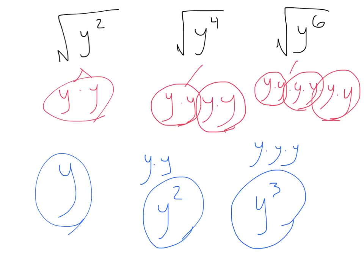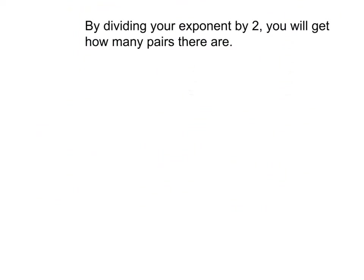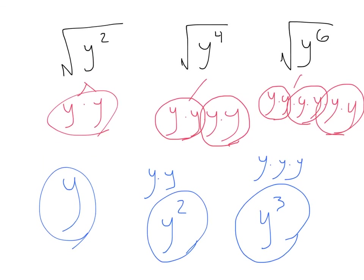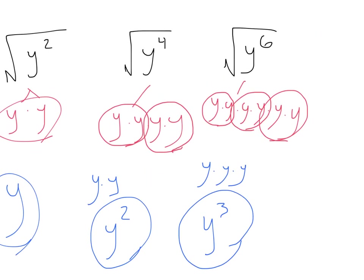You might be noticing a pattern here. That pattern would be: by dividing your exponent by two, you will get how many pairs there are. So let's apply that rule. Here we have an exponent of two — divide by two, we have one y left over. Here we have y to the fourth — four divided by two is two, leaving us with y squared. Here we have y to the sixth power — six divided by two is three, and we're left with y to the third.